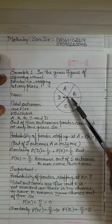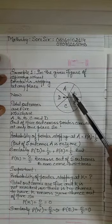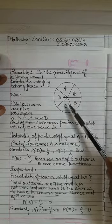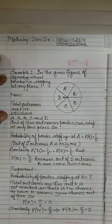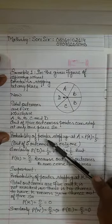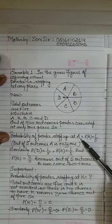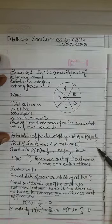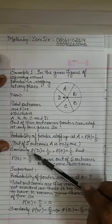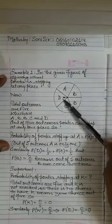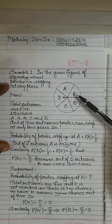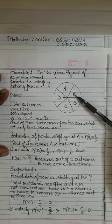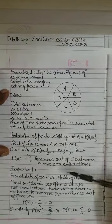Now come to example one: there is a spinning wheel with a pointer. Five parts are there — in one part A is written, two parts have B, one part has C, and one part has D. So total outcomes are five. Probability of pointer stopping at A is one out of five, so one upon five. Probability of getting C is also one upon five. Probability of getting B is two out of five, so two upon five.